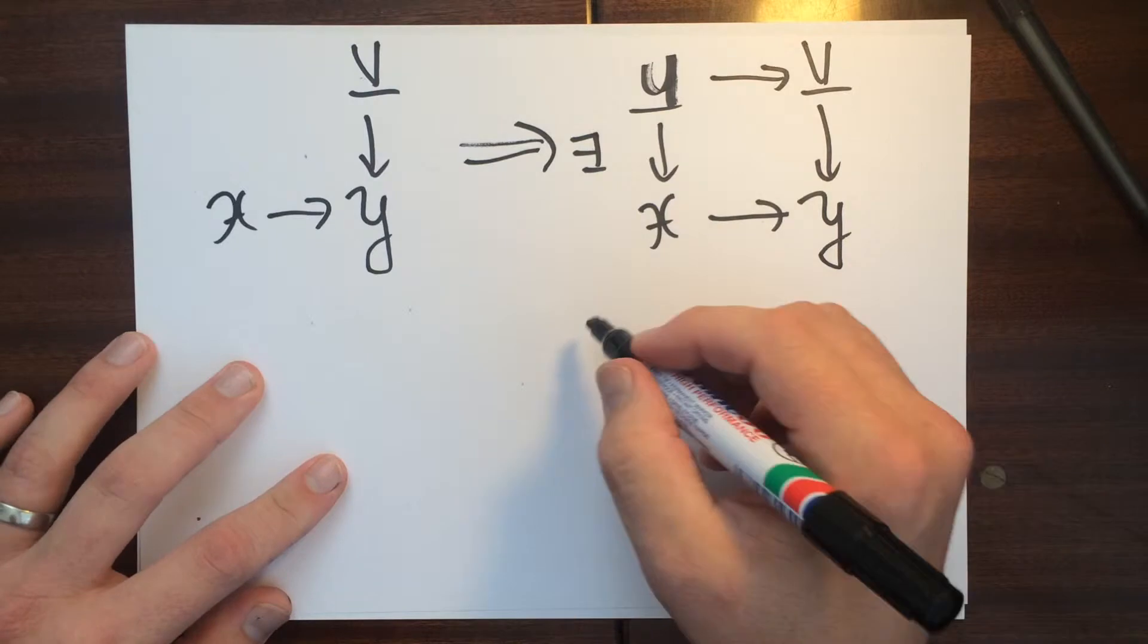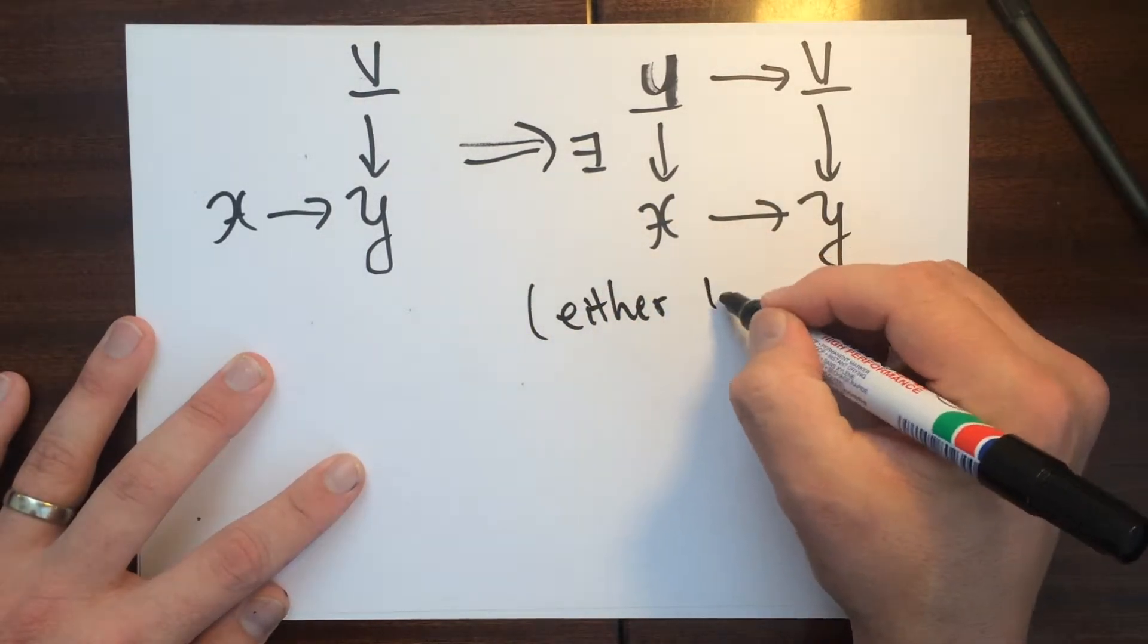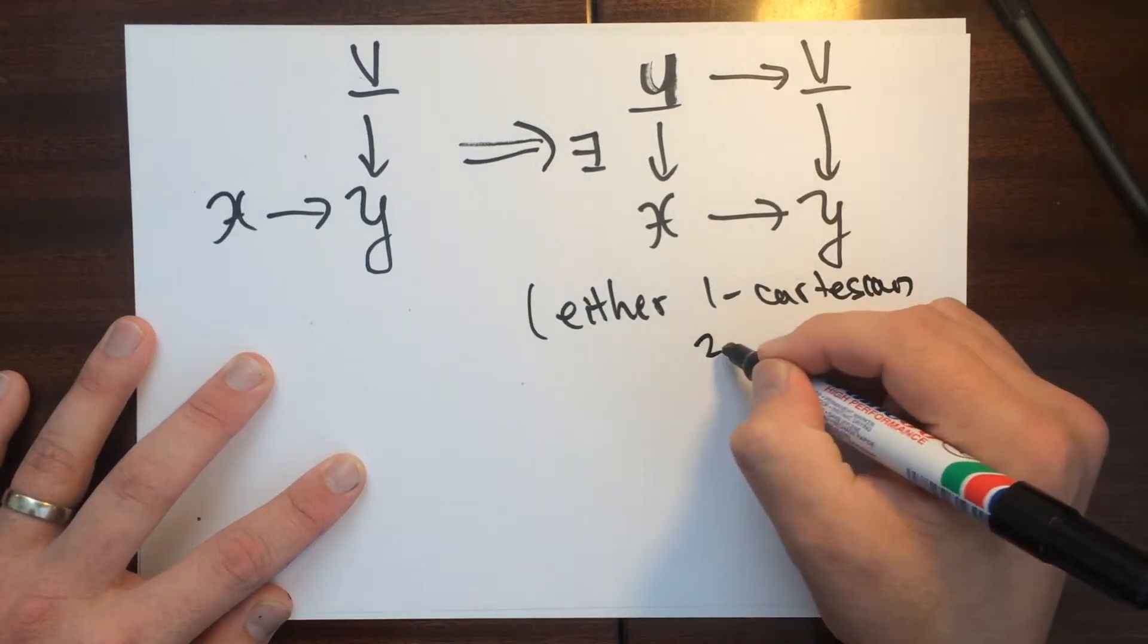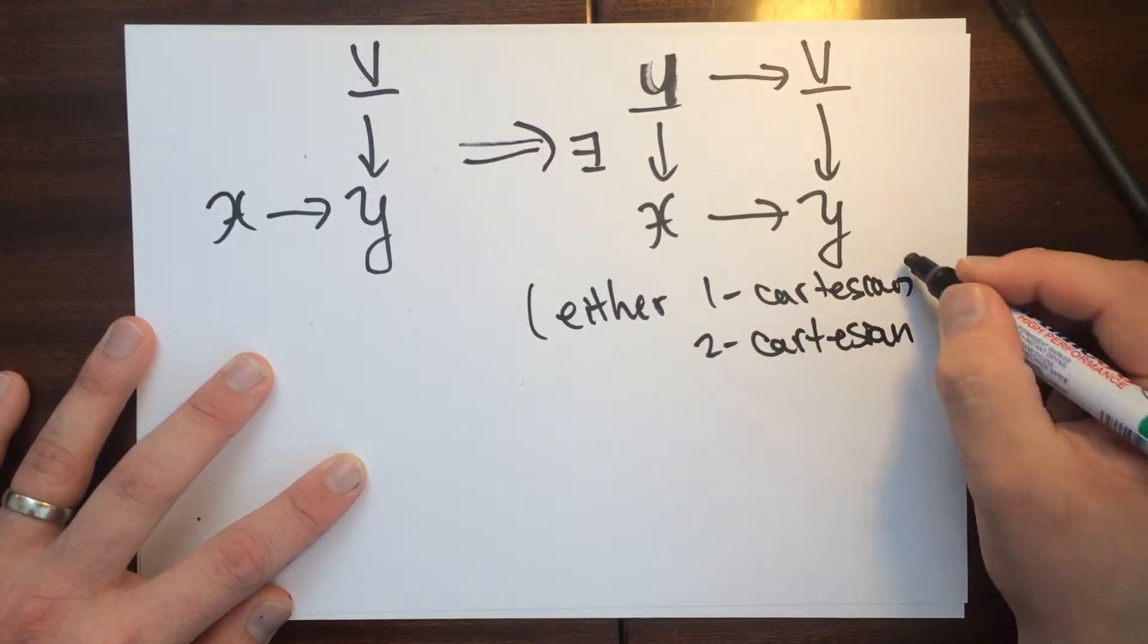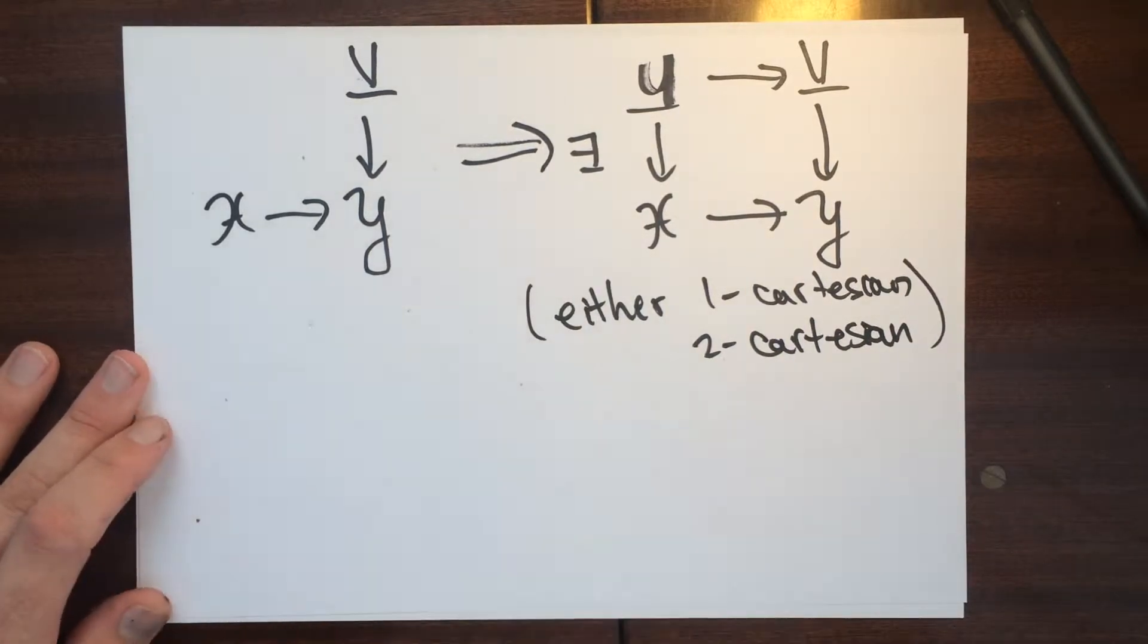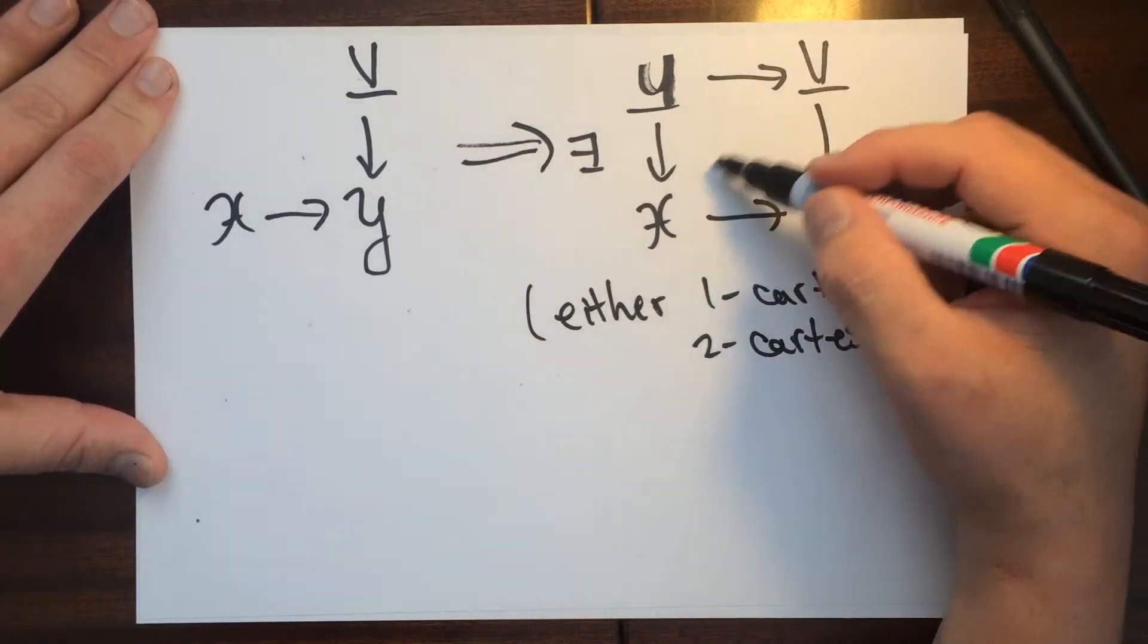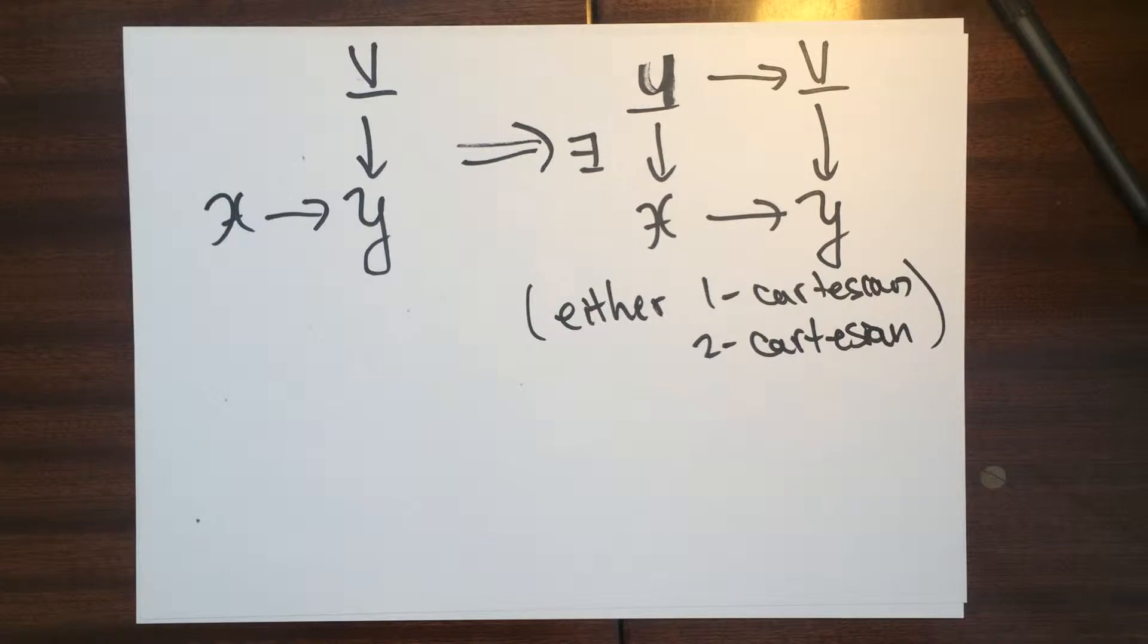That's Cartesian. And so this could either be, depending on, this is either one Cartesian or two Cartesian, depending on your flavor of morphism here. Also, I should mention that, so let's see, so this is two Cartesian. Two Cartesian means that there's going to be a natural transformation between those two compositions of functors. So let me give some remarks.